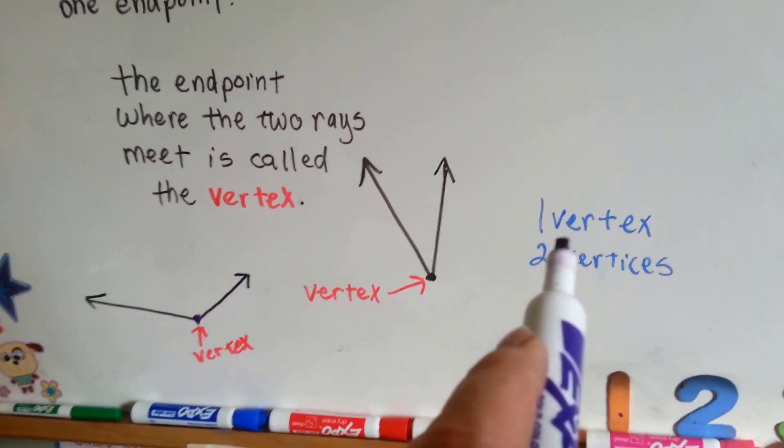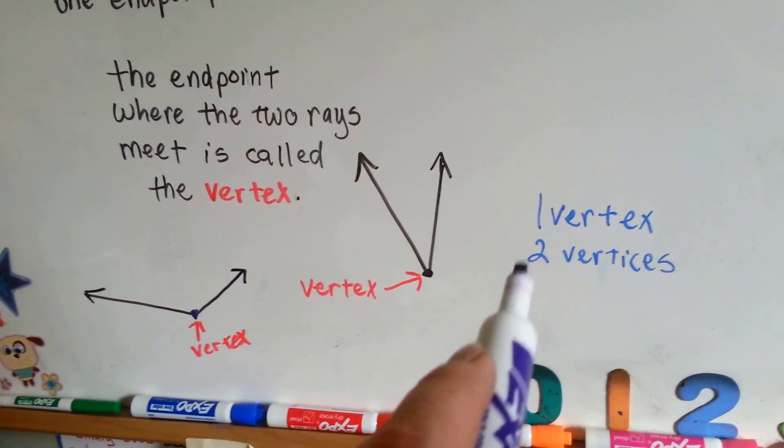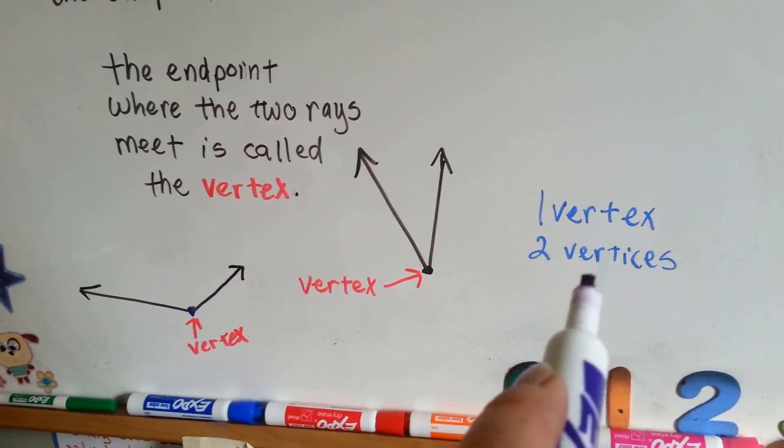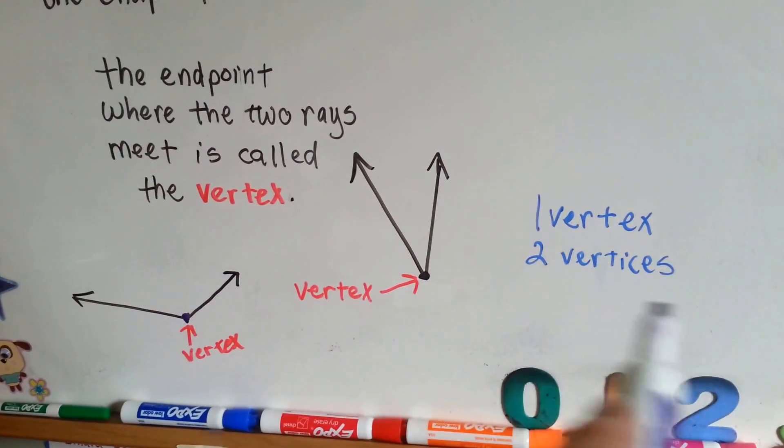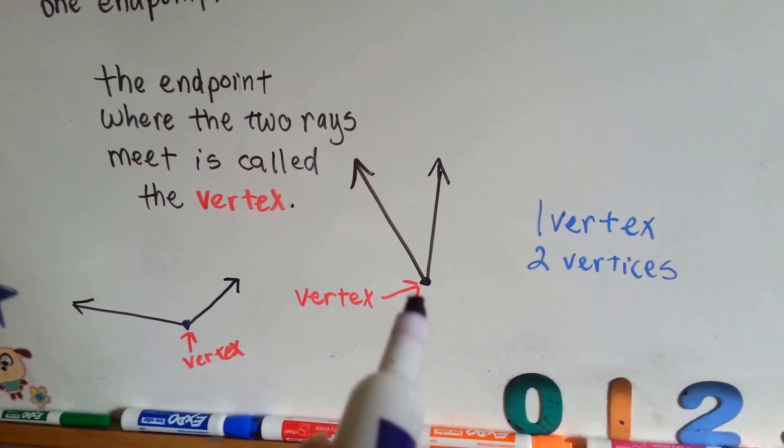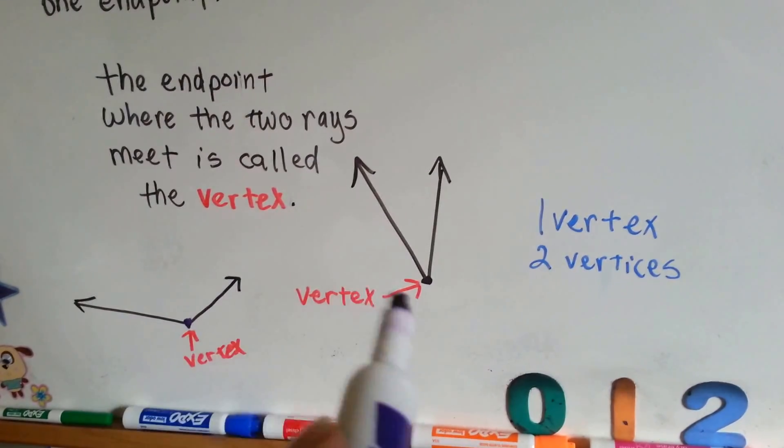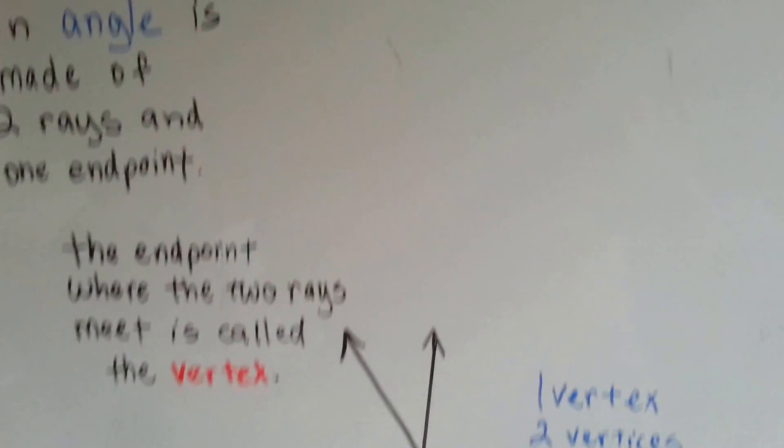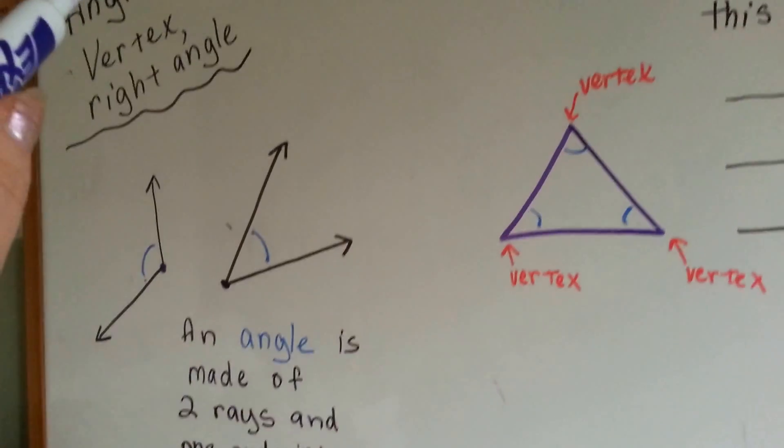When you have one of them, it's called a vertex. When you have two or more, it's called vertices. So here's one vertex, here's two vertices. We talked about angle and vertex.